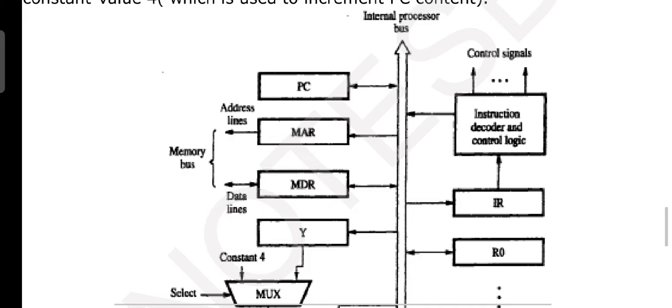MAR and MDR, they are accessing the data from internal processor bus. Check MDR carefully. There is a bi-directional arrow, outward arrow is there. Data lines, it is mentioned, towards memory bus. Even address lines are mentioned with respect to MDR as well.